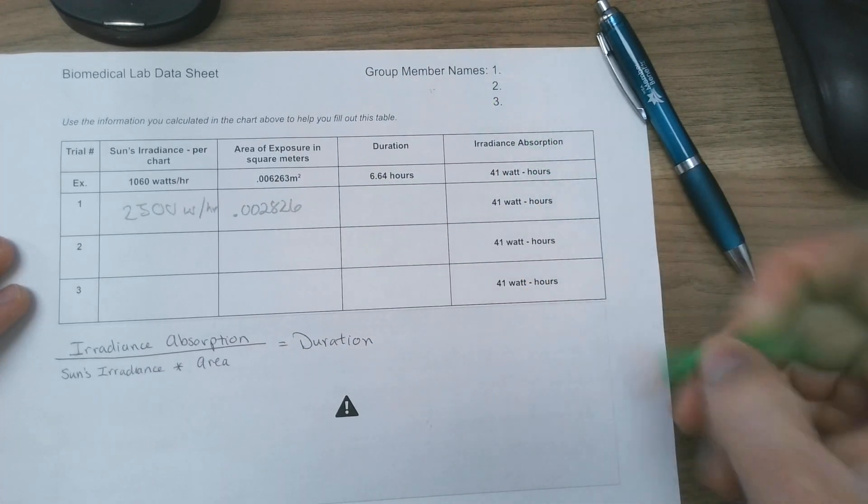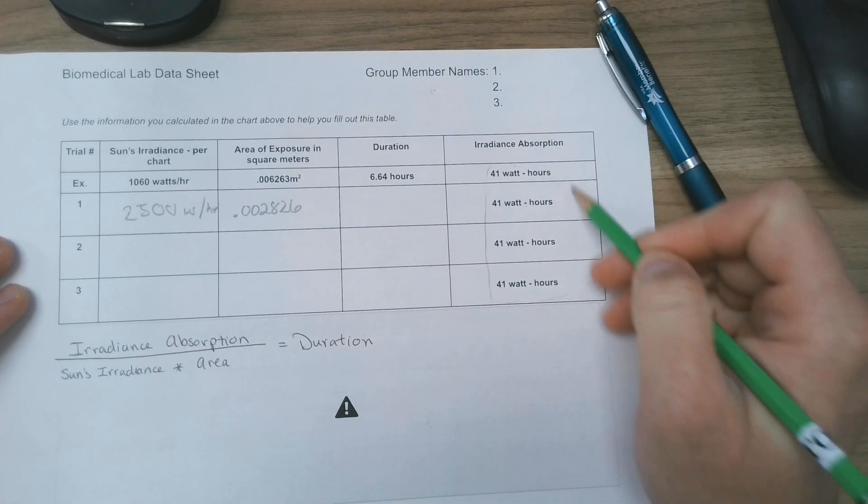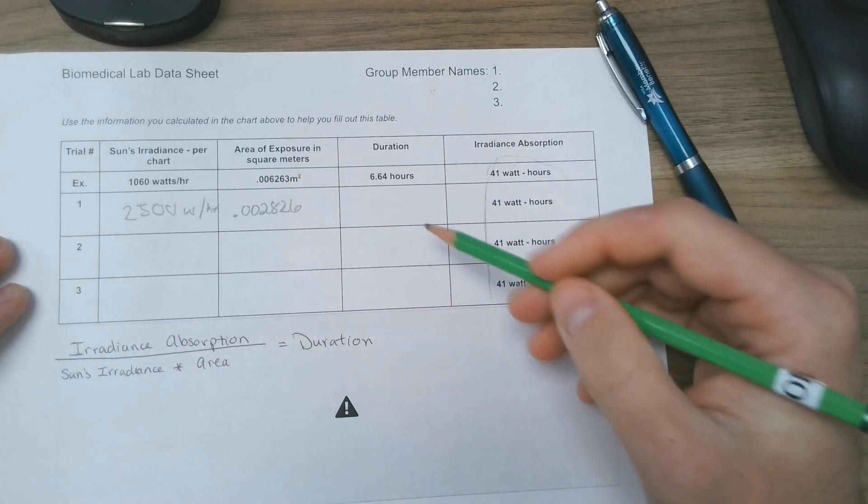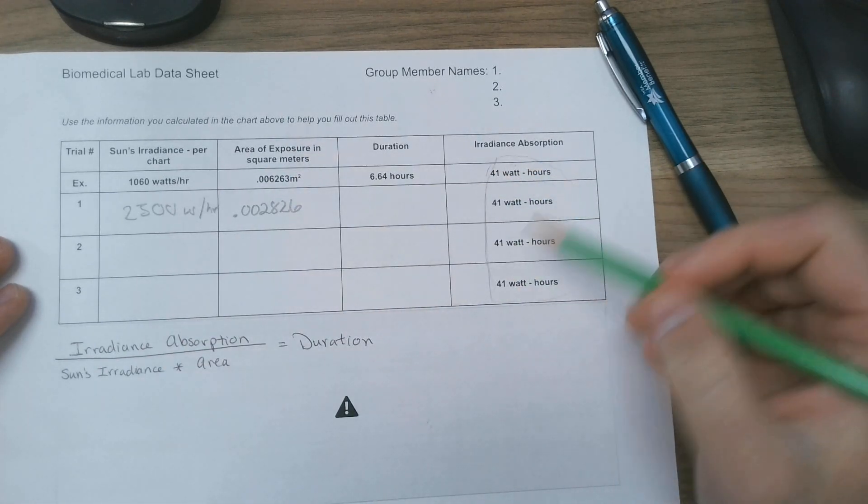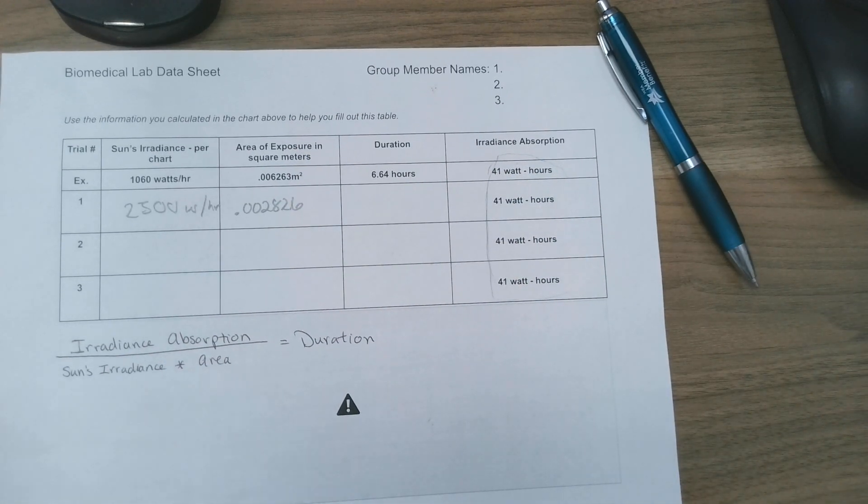We're given the irradiance absorption, which is going to be 41 watt hours for every case. Every scenario we're doing 41 watt hours. That's how many watt hours our bodies need to absorb the blue light to help prevent and curb the side effects of Grover's disease.